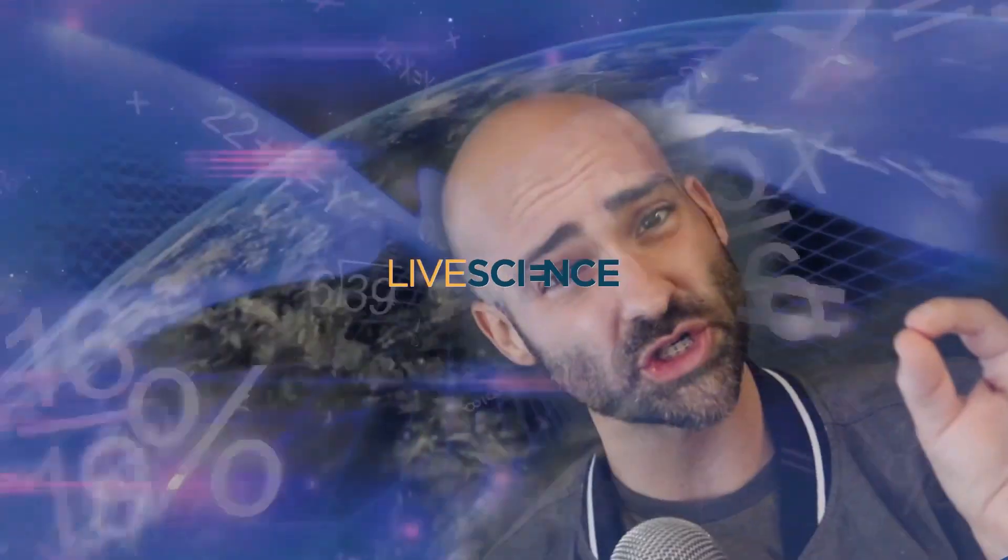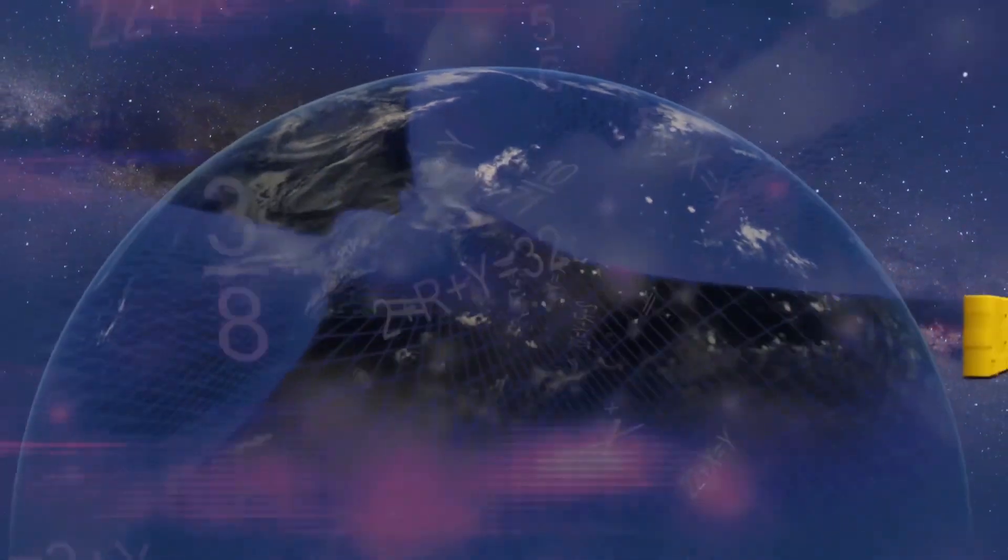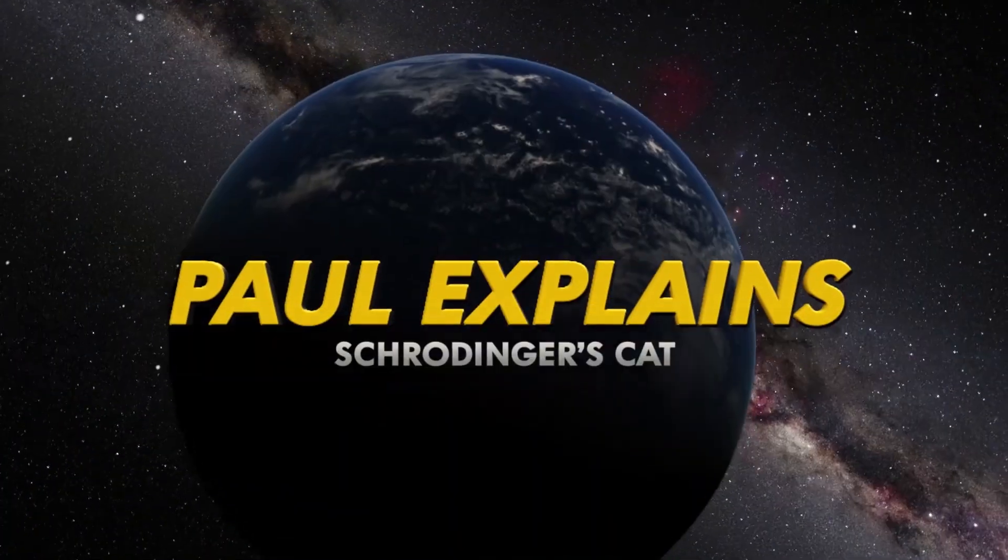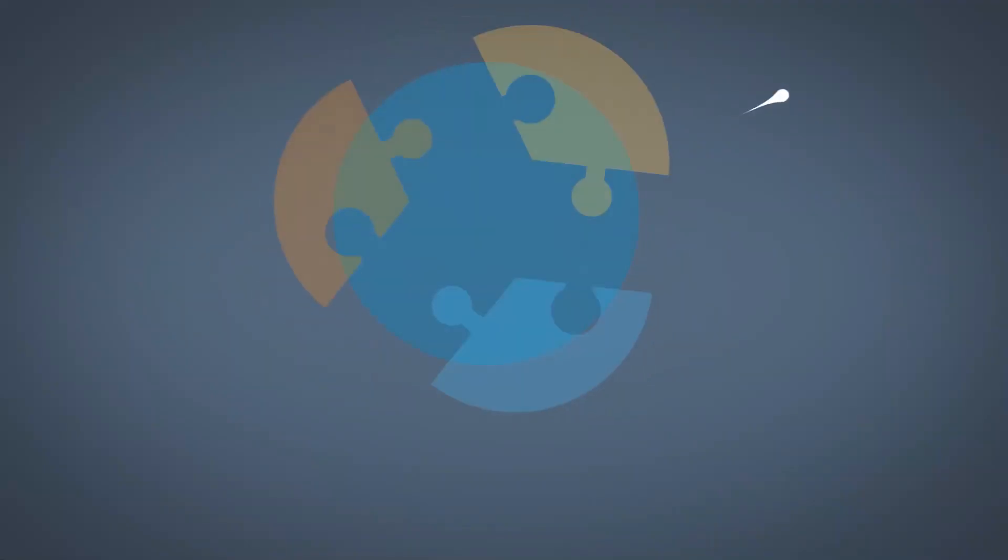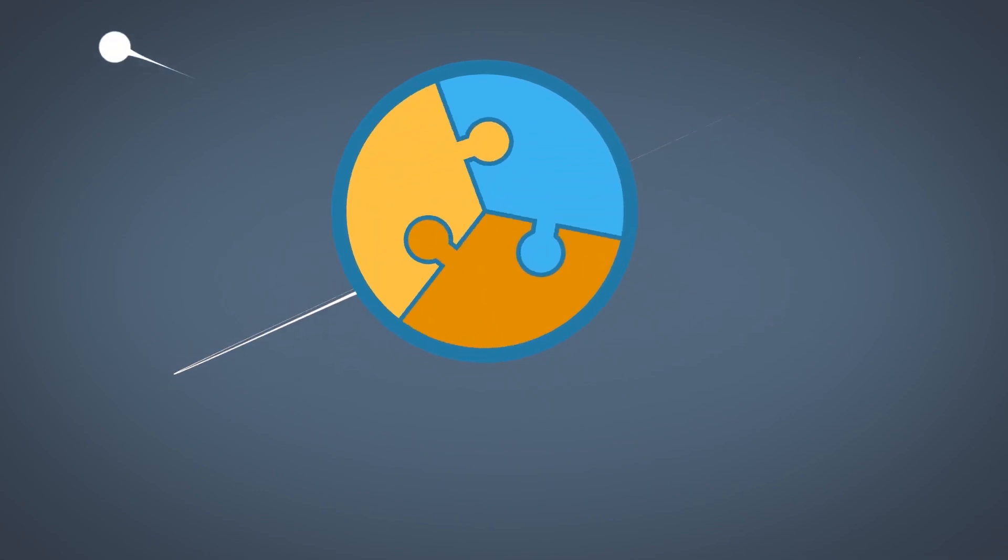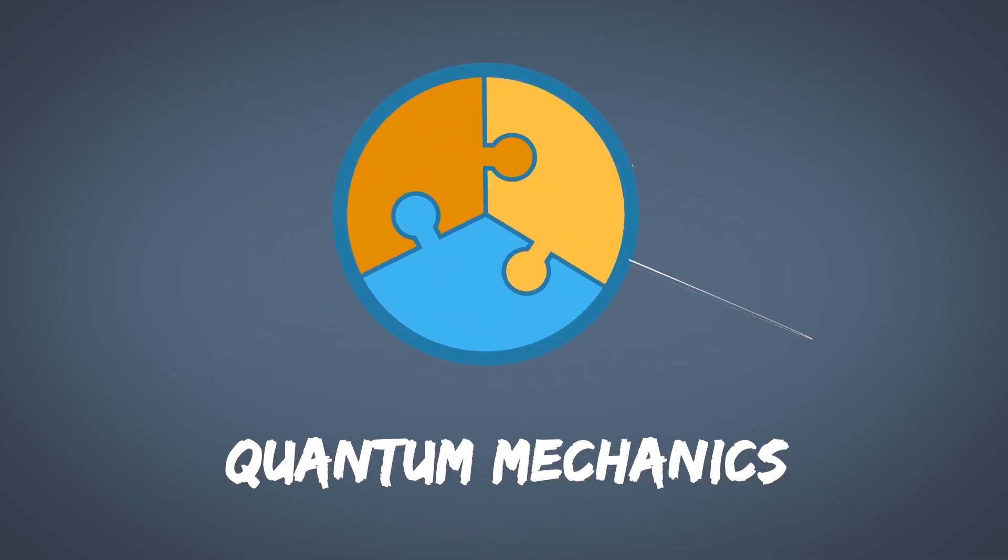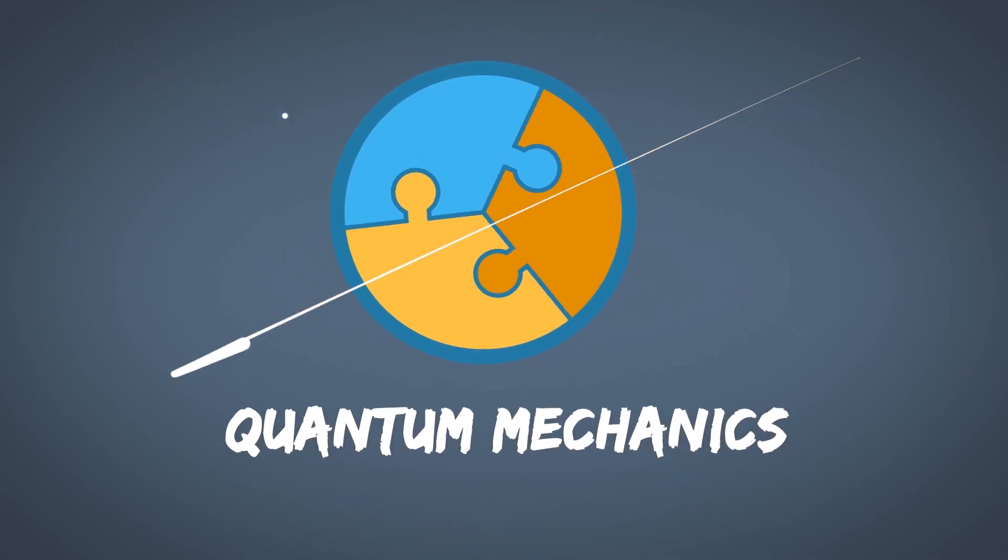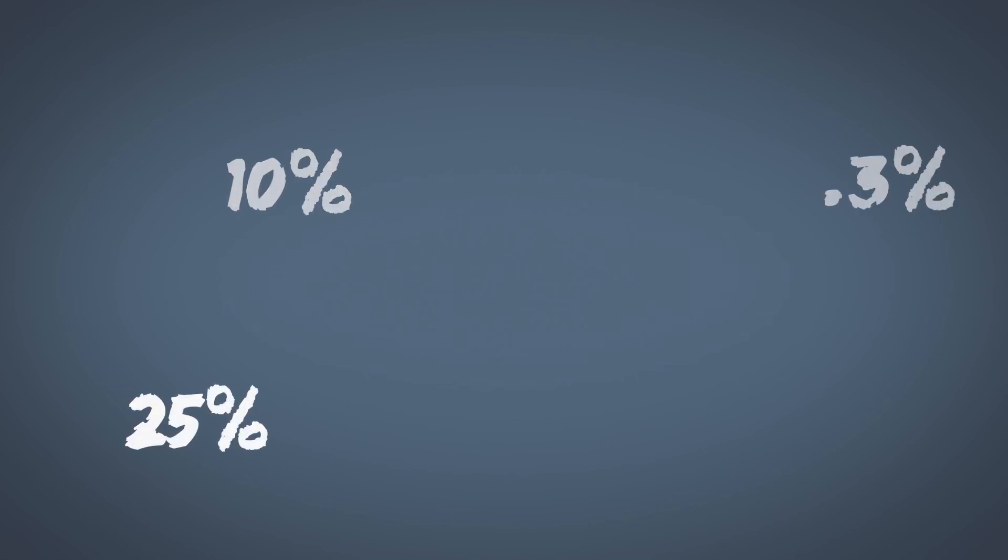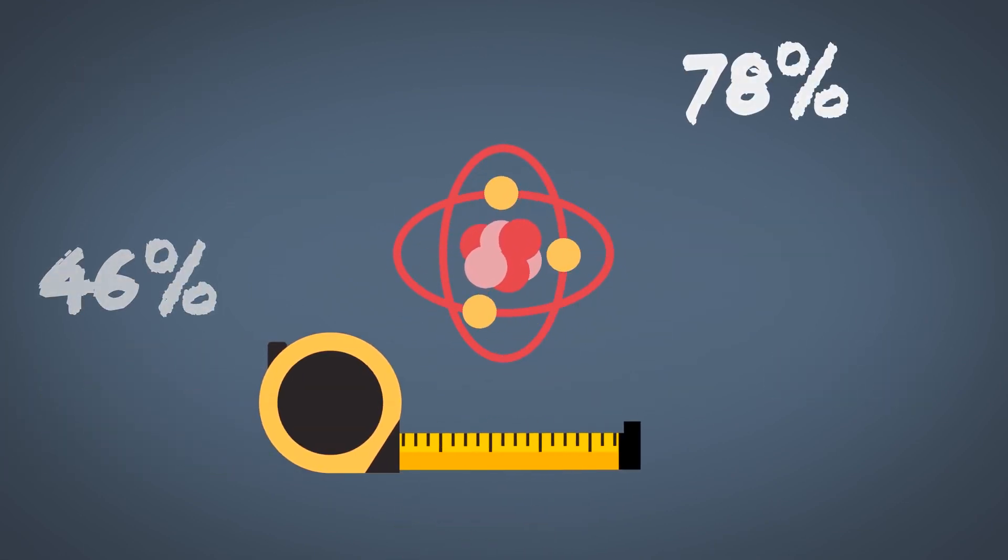I'm Paul Sutter and this is Paul Explains, the show where I explain. The whole machinery of quantum mechanics is designed to translate the probabilities of what you might measure